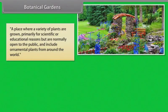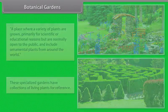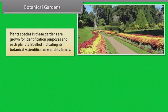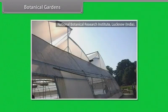A botanical garden is a place where a variety of plants are grown, primarily for scientific or educational reasons, but are normally open to the public and include ornamental plants from around the world. Plant species in these gardens are grown for identification purposes and each plant is labeled indicating its botanical scientific name and its family. Famous botanical gardens include the Royal Botanical Gardens, Kew, England, and the Indian Botanical Research Institute, Lucknow, India.